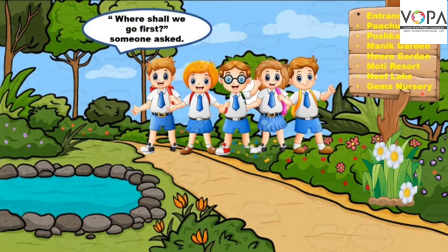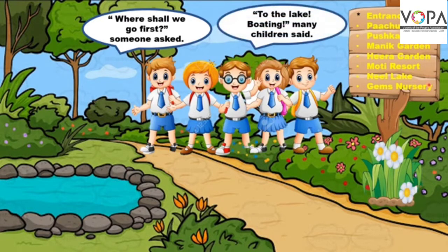One child said, 'Where shall we go first?' someone asked — हम पहले कहाँ जाएंगे? किसी ने पूछा। 'To the lake for boating!' many children said — जील की तरफ, कई सारे बच्चों ने कहा, जील की तरफ वहाँ हम boating करेंगे।